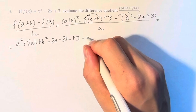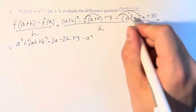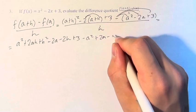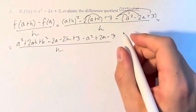Minus a² minus negative 2a is plus 2a minus 3. This is over h.